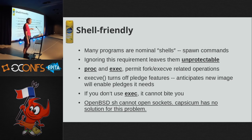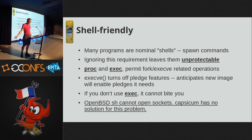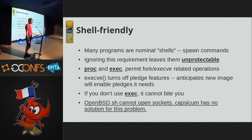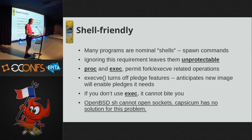OpenSSH, for example, with the way it's pledged — if you find a bug in it and manage to start running ROP code in it, you'll discover you can't open sockets, can't pass file descriptors, can't do DNS lookups. That ksh is not supposed to do those things and never has done them — that type of work is done by asking another program to do it. These 20 or so programs are protected.